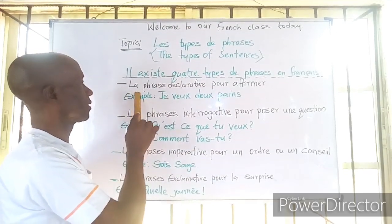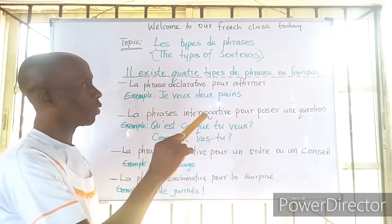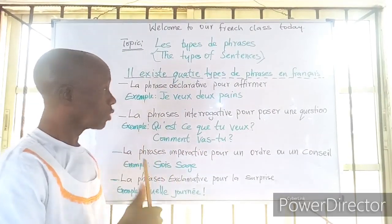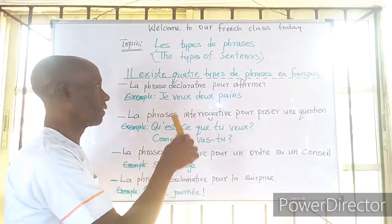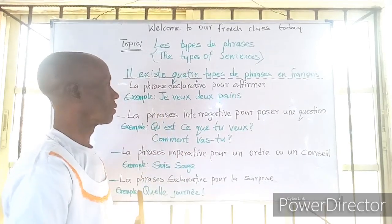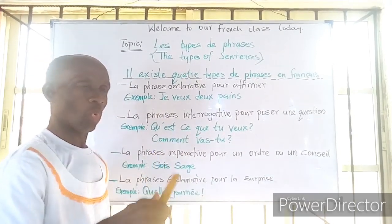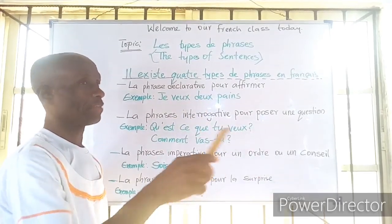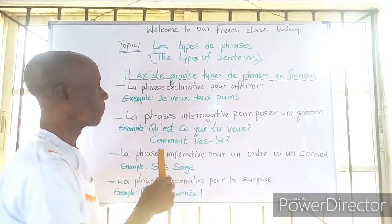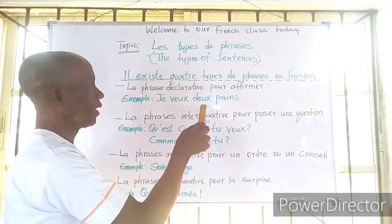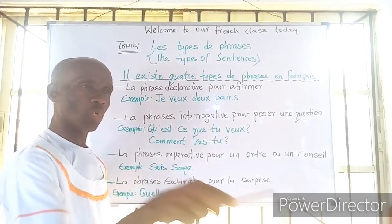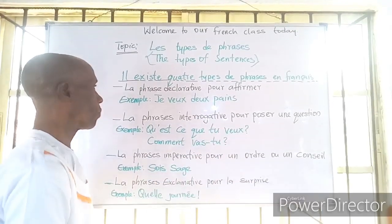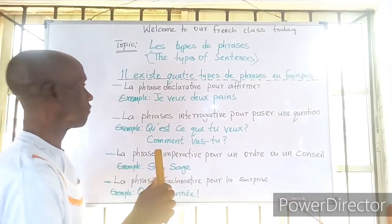Now we'll take it one more time. The first one is la phrase déclarative pour affirmer. With this sentence you can affirm that something is yours or that you want something — in an affirmative, positive way. For example: 'Je veux deux pains' — that means I want two breads. Affirmative.